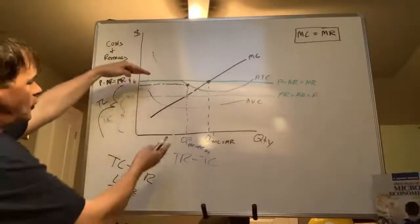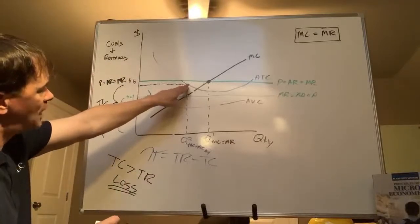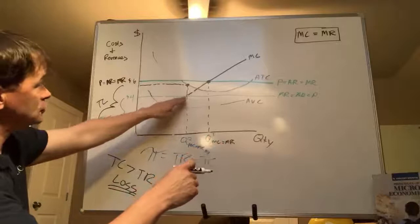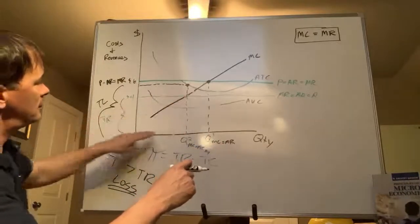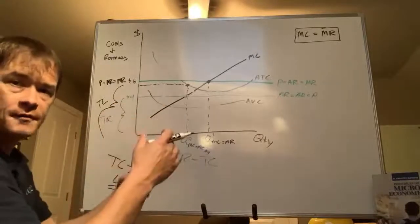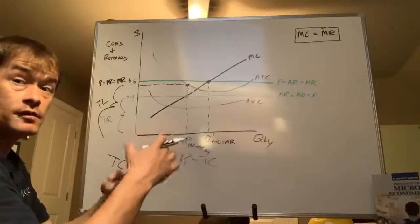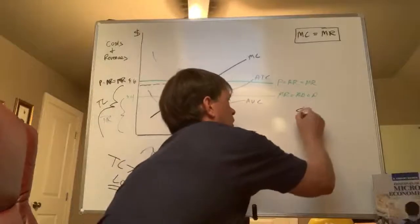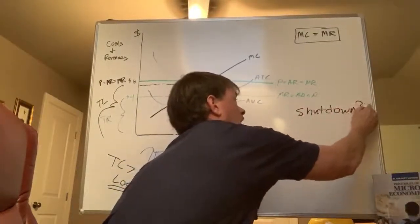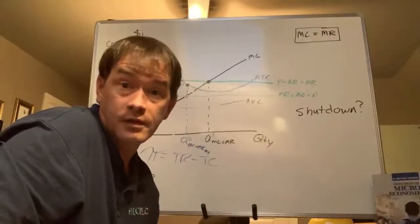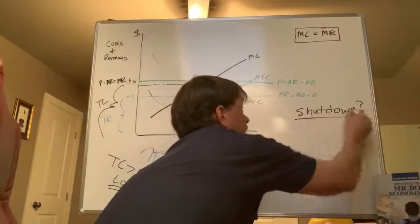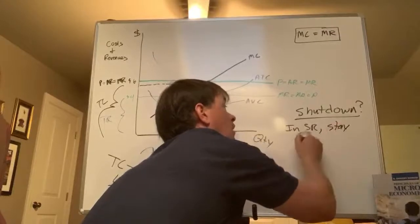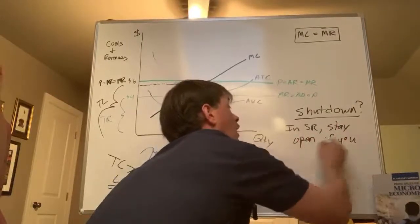Drop a line up to average total cost — that's your total cost box. From marginal cost equals marginal revenue, that's your total revenue. You're operating at a loss. So when do we shut down? In the long run, if you're losing money, shut down no matter what. But in the short run, you stay open if you are covering your variable costs.